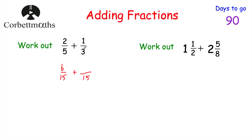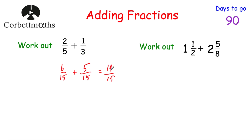So we multiply the two by three, and two multiplied by three is six. So two fifths is equivalent to six fifteenths. Now for one third, to get from three to 15 we multiply by five, so we need to multiply the numerator by five as well. One times five is five. So we have six fifteenths plus five fifteenths, and six fifteenths plus five fifteenths is eleven fifteenths. So two fifths plus one third equals eleven fifteenths.